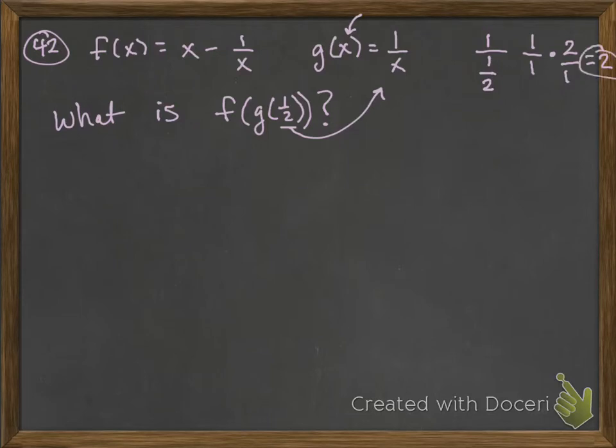So now, g at 1 half is actually equal to 2. So I can substitute this 2 in for my g of 1 half.